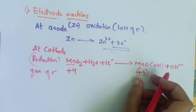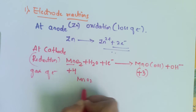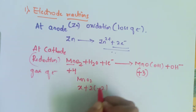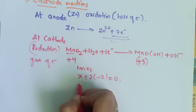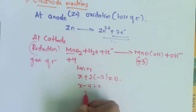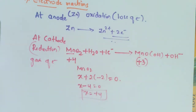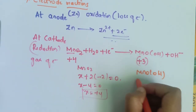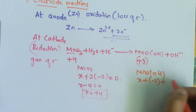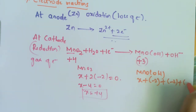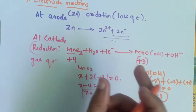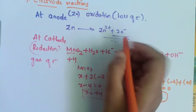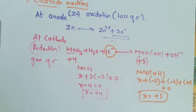Let's verify the oxidation states. For MnO2: X + 2(−2) = 0, so X = +4. For MnOOH: X + (−2) + (−2) + (+1) = 0, so X = +3. Going from +4 to +3, one electron is utilized, which is why we write one electron in the cathode reaction.